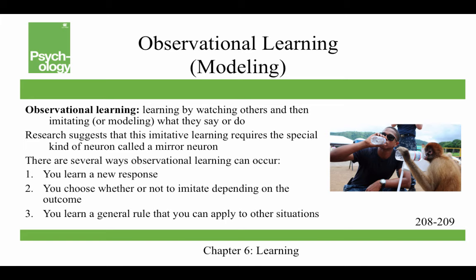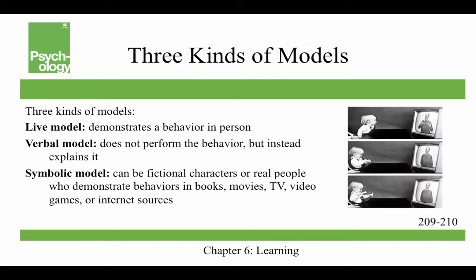Research suggests that this imitative learning requires a special kind of neuron called a mirror neuron. This theory was developed as a type of behaviorism by Albert Bandura, who called it social learning theory. There are several ways observational learning can occur: you might use it to learn a new response, choose whether or not to imitate depending on the consequences of the behavior, or learn a general rule that you can apply in other situations.